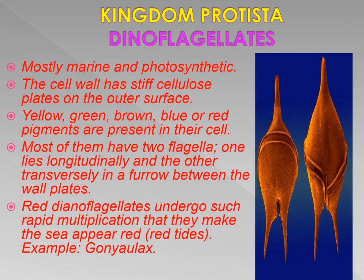The second type of Kingdom Protista is the dinoflagellates. They are mostly found in marine environments and are photosynthetic, meaning they can prepare their own food. The cell wall has stiff cellulose plates on the outer surface. Yellow, green, brown, blue, or red pigments are present in their cells.